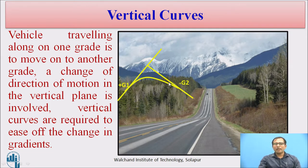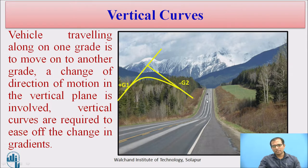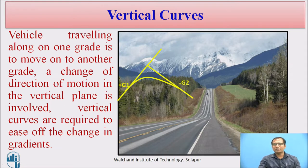The main criteria behind designing a vertical curve is sight distance. The vehicle coming on one side should be able to see an object on the opposite side, so that the driver can stop, slow down, or take a diversion — reducing the chance of accidents on vertical curves.